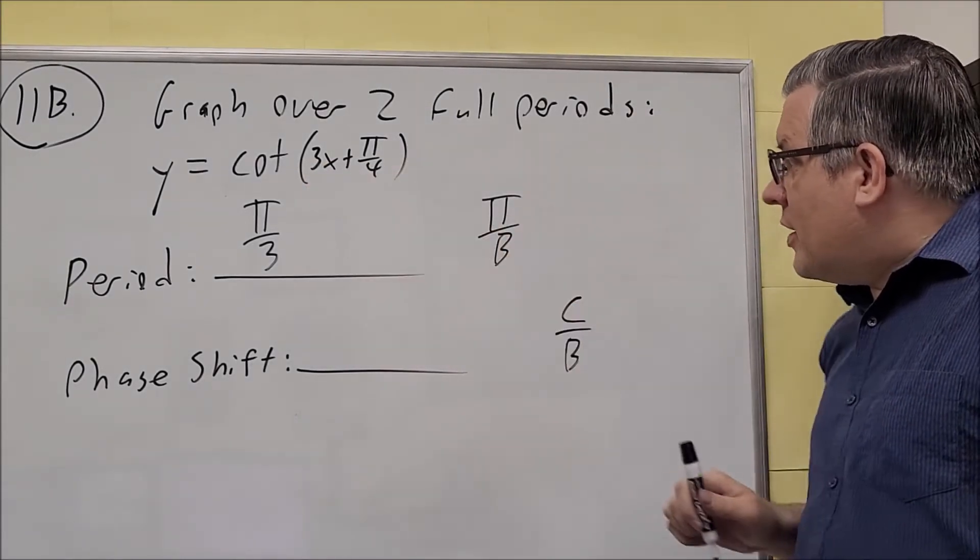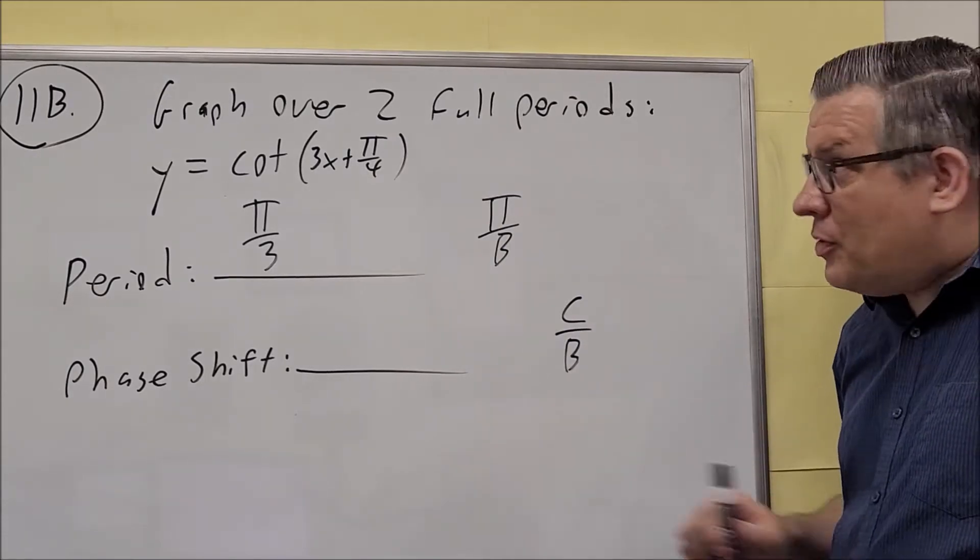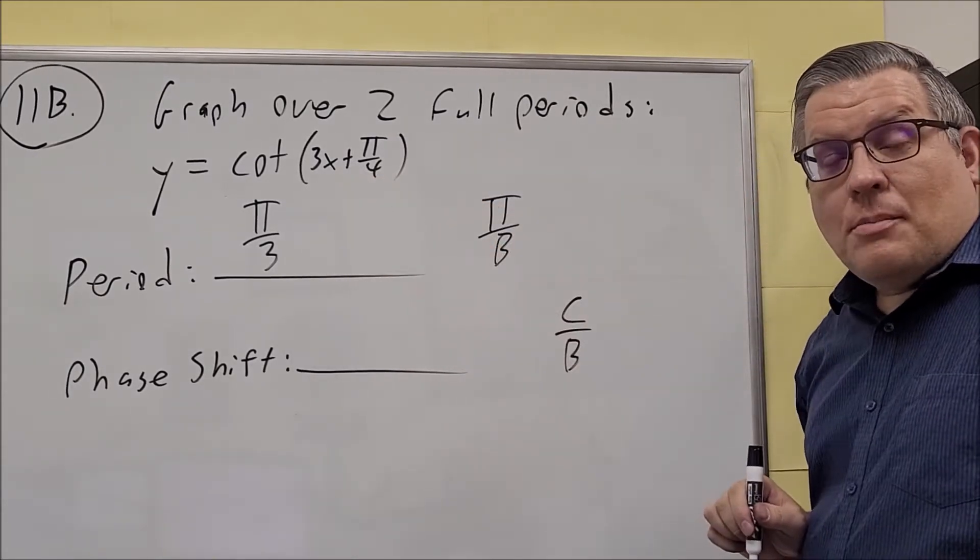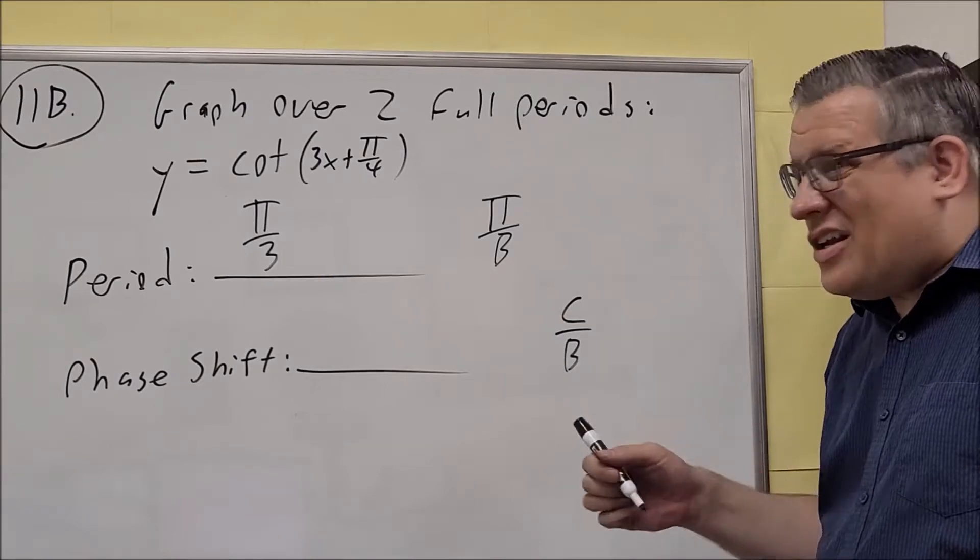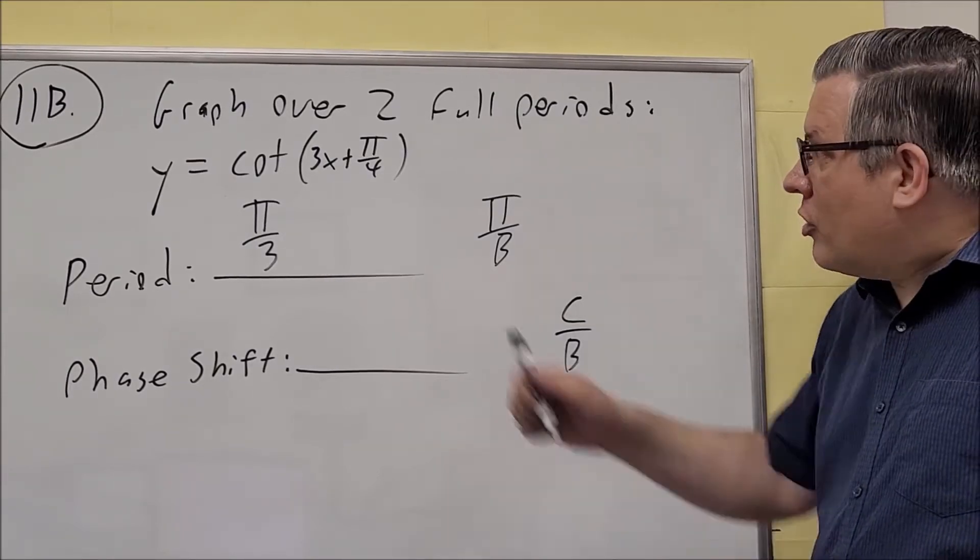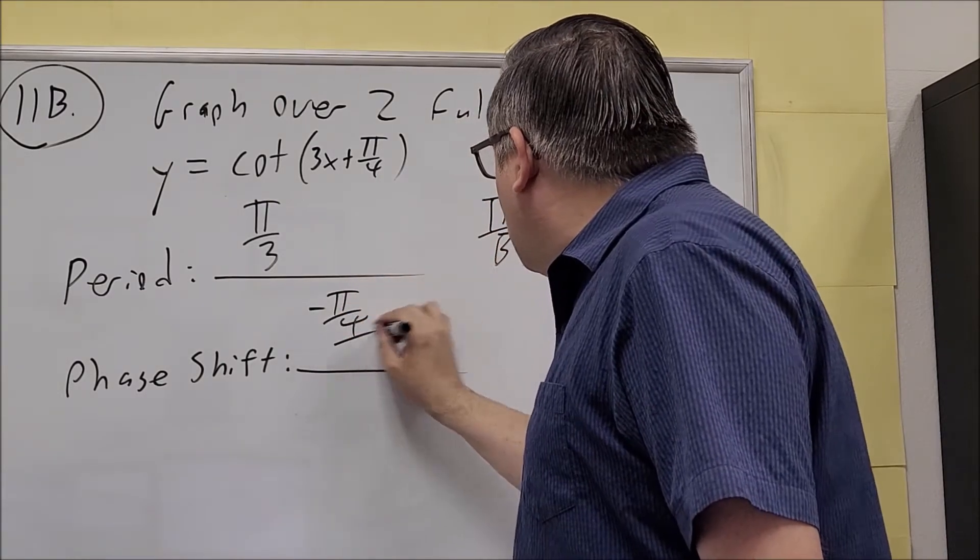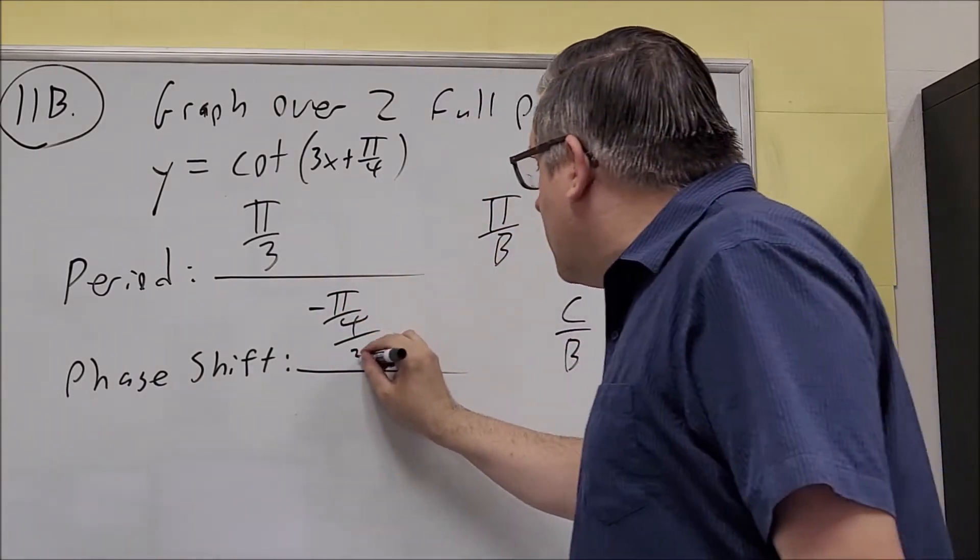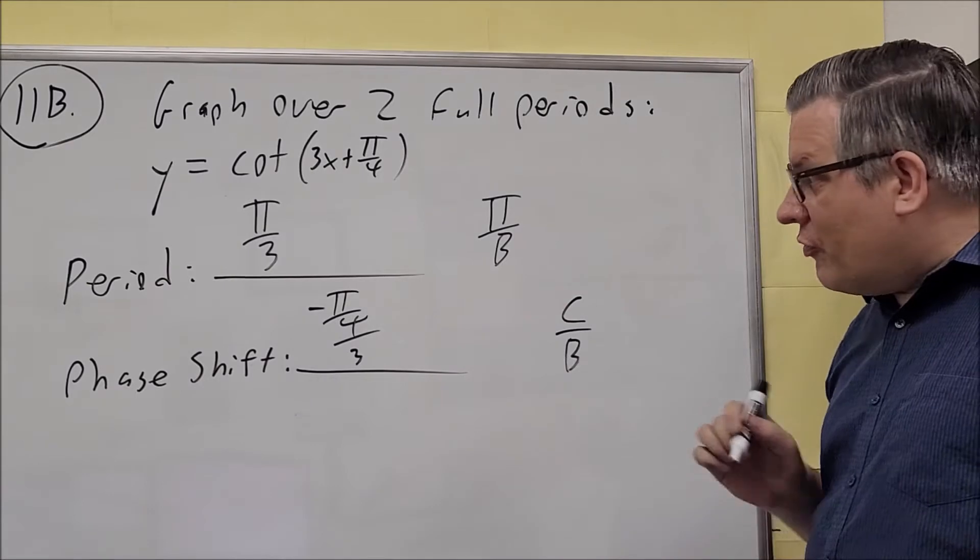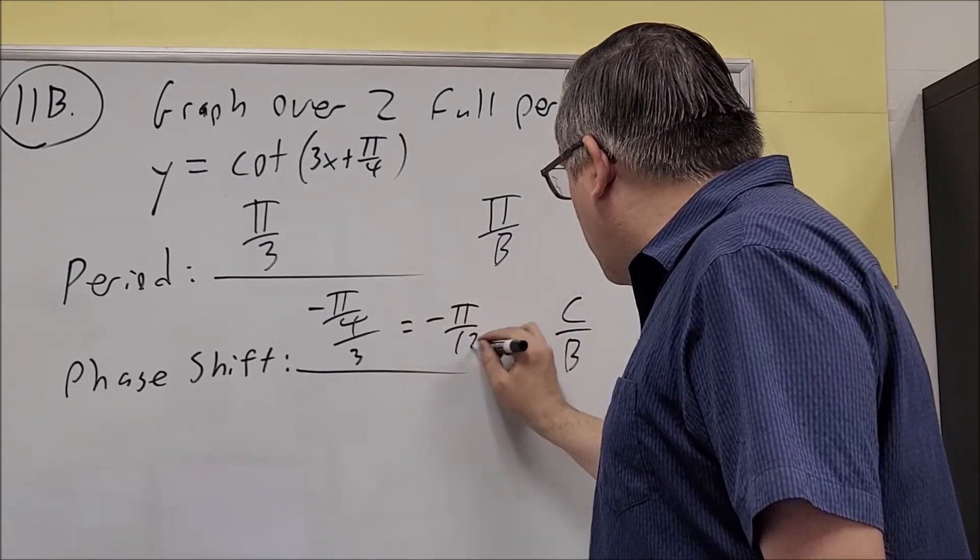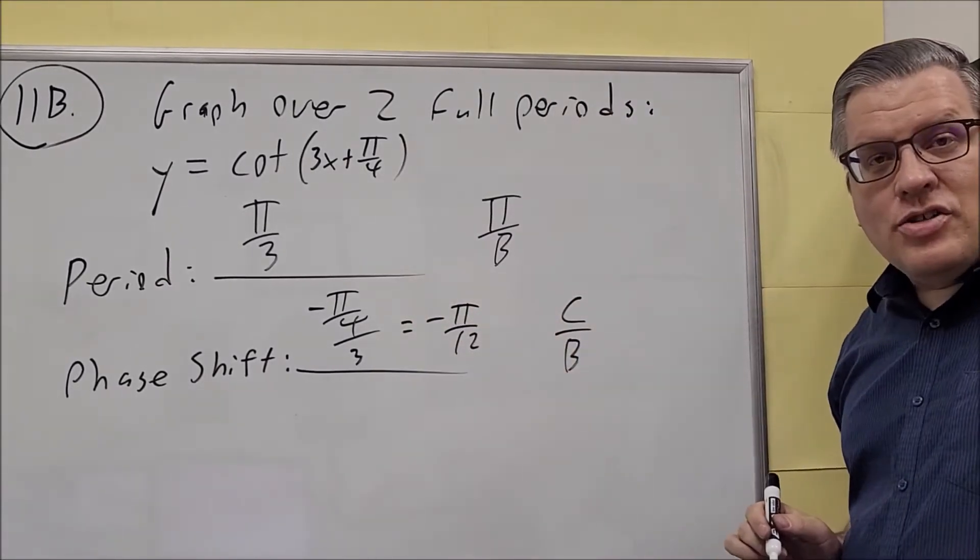Now, there's a plus sign that's here. So that means our c value is actually going to be negative because we can write that as minus a minus. We can do 3x minus a negative π over 4. So our c is negative. So negative π over 4, we're dividing it by the b, which is 3. If you flip and multiply this, you get negative π over 12 as your phase shift.